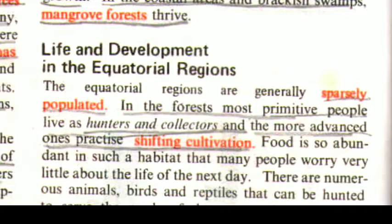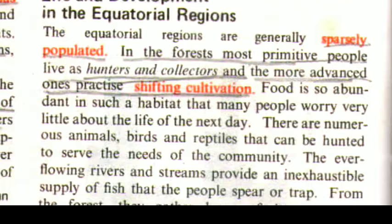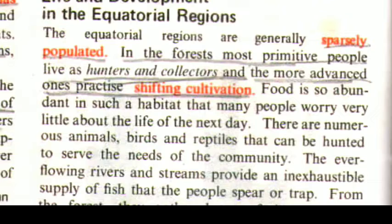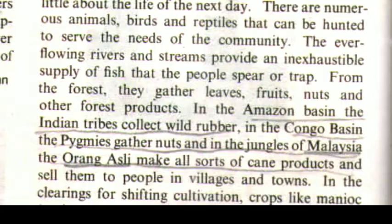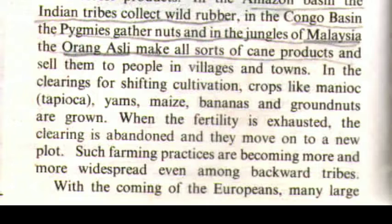The equatorial regions are generally sparsely populated. In the forest, most primitive people live as hunters and collectors, and the more advanced ones practice shifting cultivation. Food is so abundant in such a habitat that many people worry very little about tomorrow. There are numerous animals, birds, and reptiles that can be hunted. The ever-flowing rivers provide an inexhaustible supply of fish. From the forest they gather leaves, fruits, nuts, and other forest products. In the Amazon basin, Indian tribes collect wild rubber; in the Congo basin, the pygmies gather nuts; and in the jungles of Malaysia, the Orang Asli make cane products and sell them to towns.